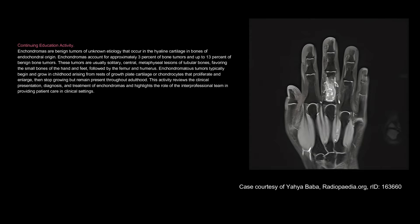Continuing Education Activity. Enchondromas are benign tumors of unknown etiology that occur in the hyaline cartilage in bones of endochondral origin. Enchondromas account for approximately 3% of bone tumors and up to 13% of benign bone tumors. These tumors are usually solitary, central, metaphyseal lesions of tubular bones, favoring the small bones of the hand and feet, followed by the femur and humerus.